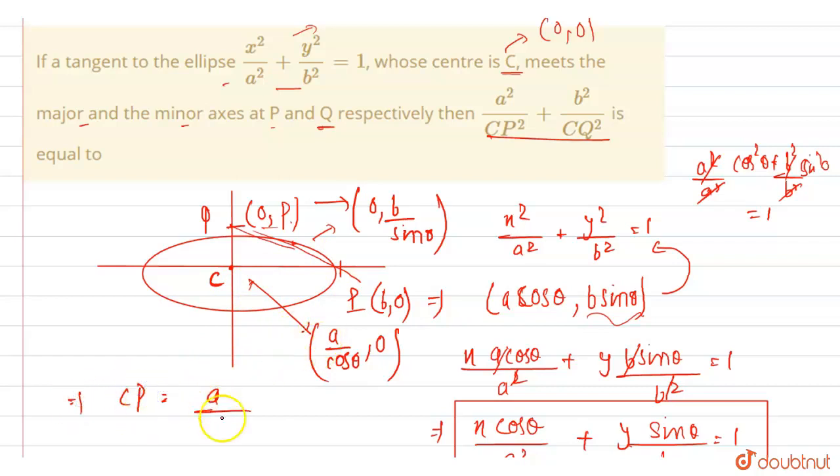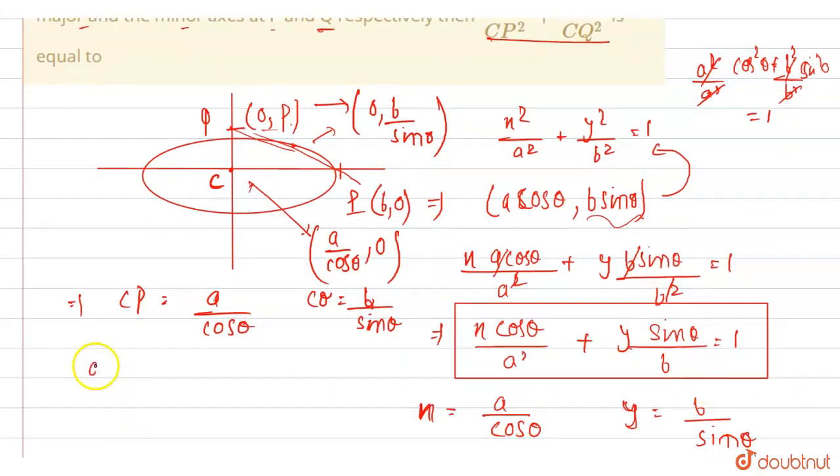The distance will be A cos theta. CP will be A by cos theta. And what will be our CQ? CQ is this. So our Y coordinate. So CQ will be B over sin theta. So we have to find A square over CP plus B square over CQ.